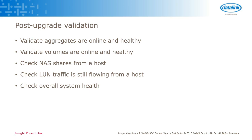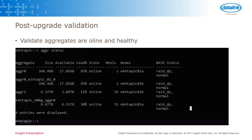Check your NAS shares from an end host. Check your LUN traffic from an end host — you should have had multi-pathing set up ahead of time on all those systems. Making sure you've got multi-pathing software that's healthy across all of your SAN hosts is extremely important. Then just look at the overall system health of the cluster. Validating the aggregates are healthy — from the command line is where I typically recommend because you'll get more information when doing your post-upgrade checks. The RAID status in that right-hand column should show normal. If you've got any issues, it's typically going to show inconsistent, and the state of the aggregate is almost always going to be offline. If you've got aggregates in an offline state or showing inconsistent, that's the point where you absolutely want to get a ticket open with support.